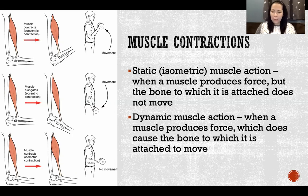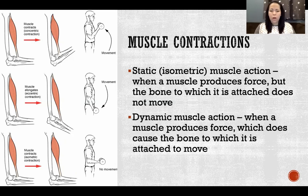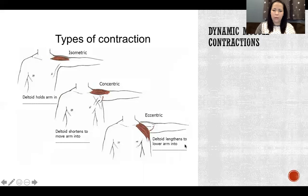In a dynamic muscle action, the muscle is producing force and the muscle is changing in length, so there is movement of at least one of the bones that the muscle is attached to. The muscle could be getting longer or shorter in a dynamic muscle action.